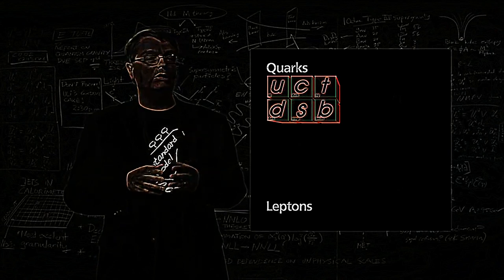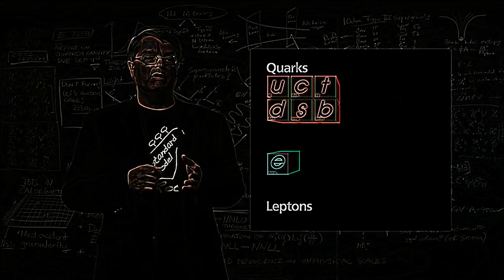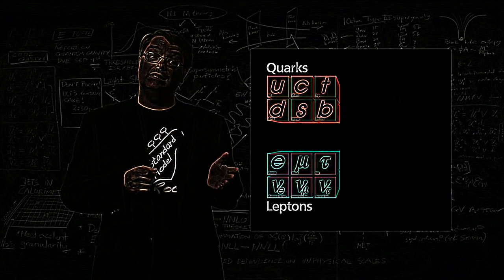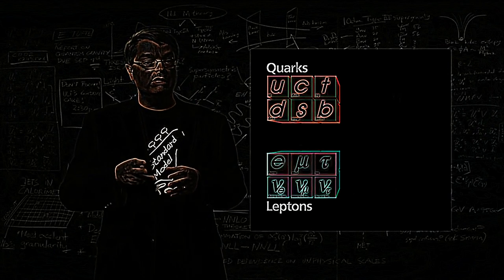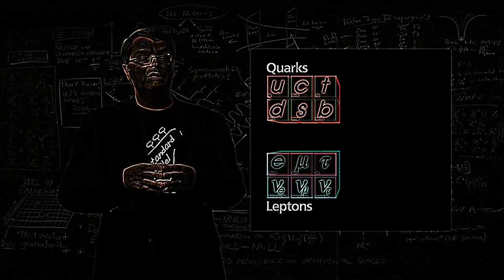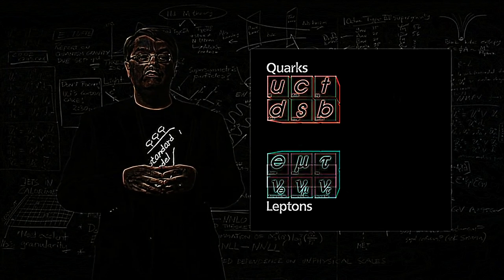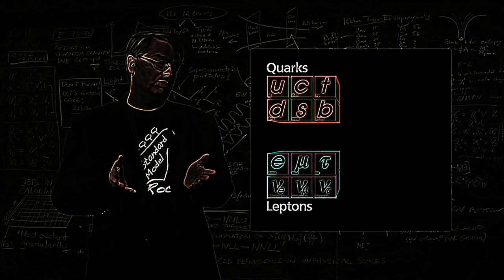In addition to the quarks, there's another class of subatomic particles called leptons. The most familiar lepton is the electron, although it turns out that there are six leptons as well. Three of these leptons have electrical charge: these are the electron, the muon, and the tau. The other three are neutrinos, which are electrically neutral.